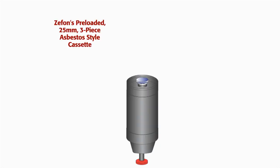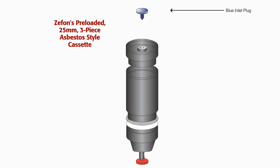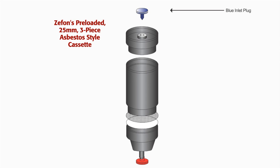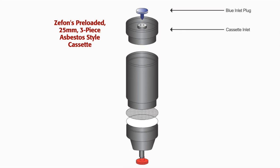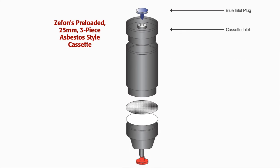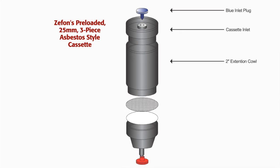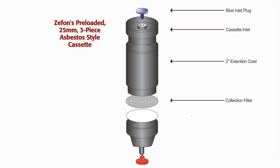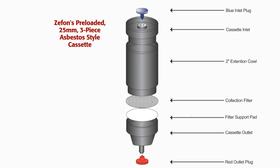Zefon's preloaded 25mm three-piece asbestos style cassettes are also configured with a blue inlet plug, cassette inlet, extension cowl, collection filter, filter support pad, cassette outlet, and a red outlet plug.